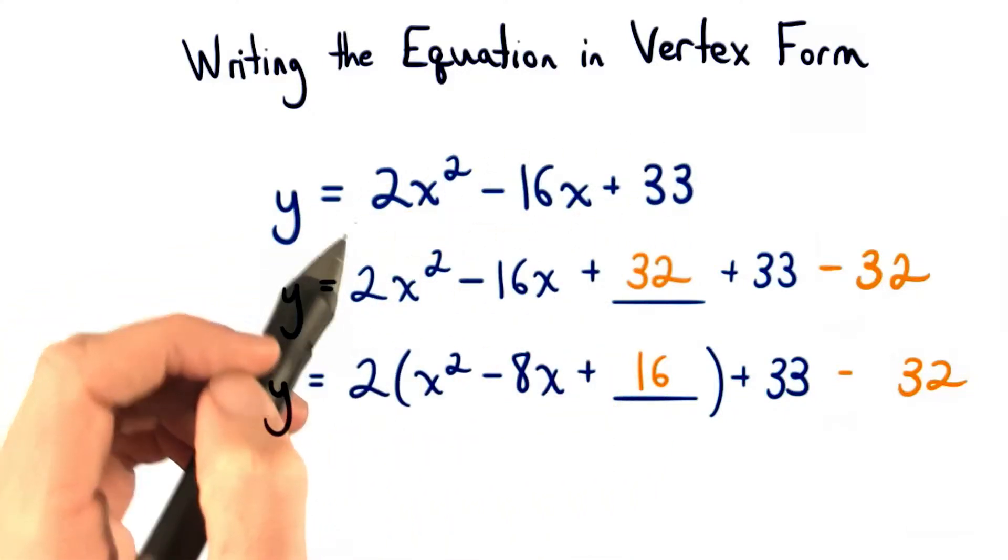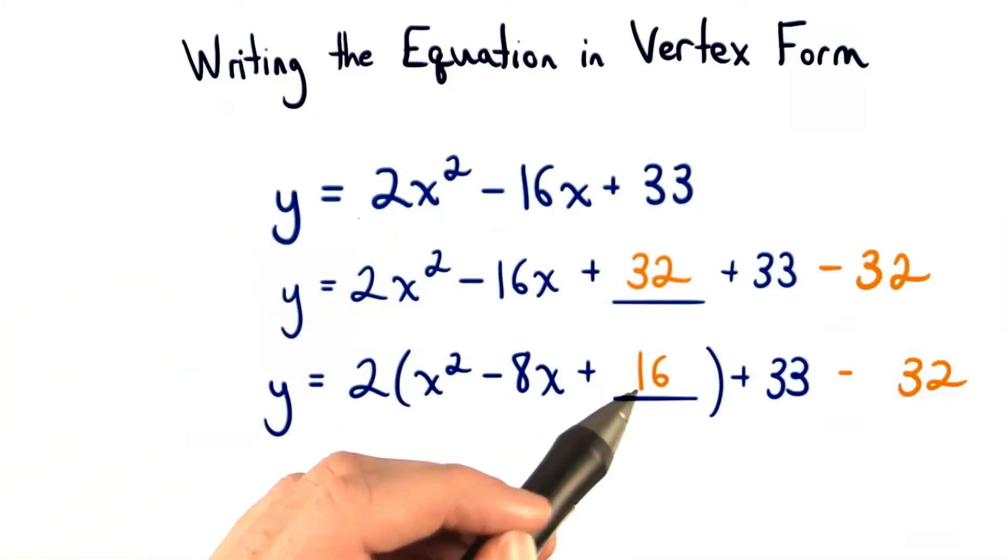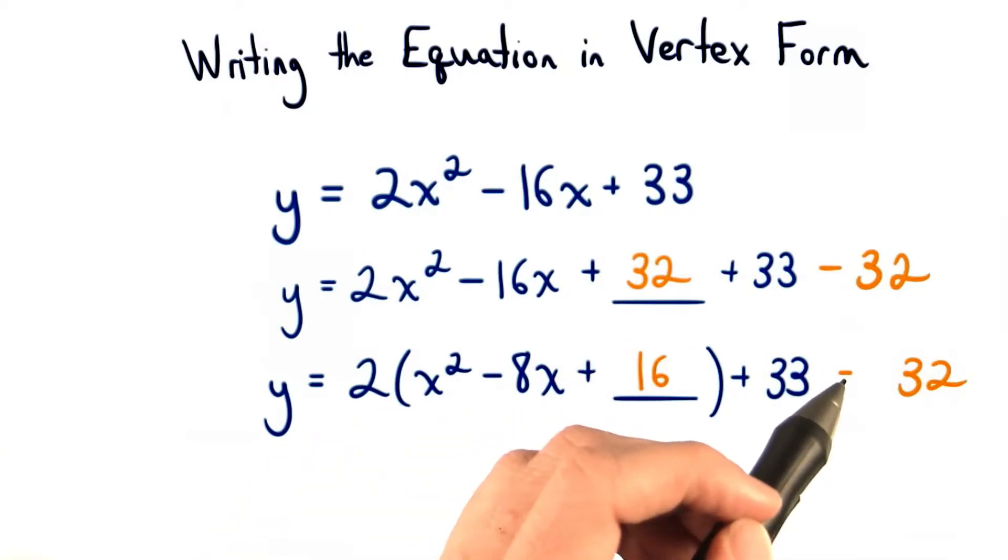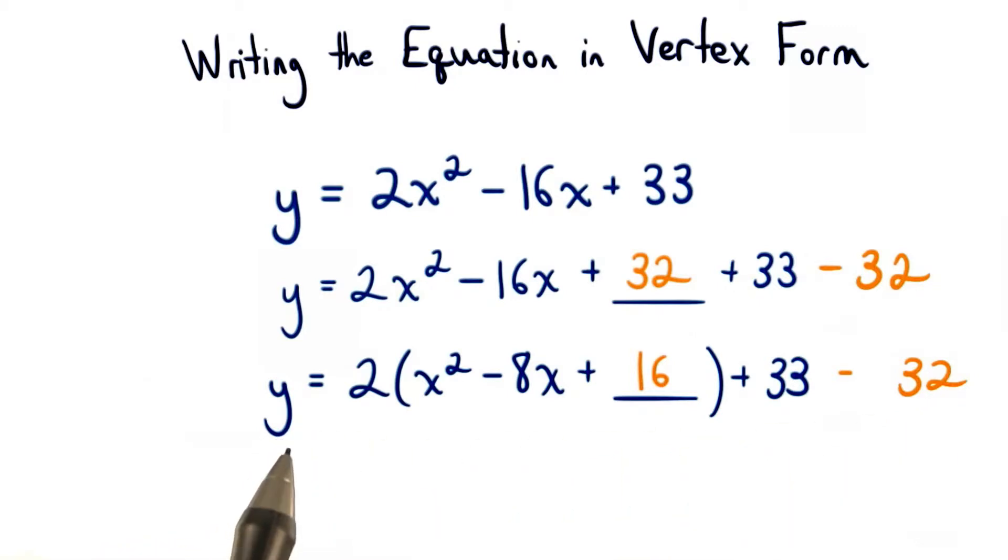So we took our original equation and we completed the square. We added 32 to complete the square, which means we needed to subtract 32 from the same side of the equation, so that way our equation remained unchanged, or it remained balanced.